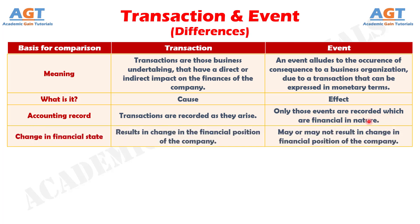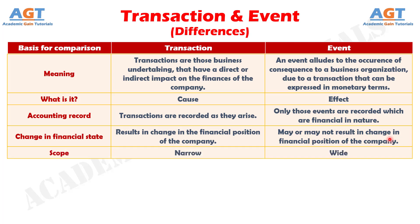Number four: the business transactions may change the financial position of the company as it has a direct impact on the company's finances. On the contrary, the events may or may not have an impact on the business finances. Difference number five: the scope of an event is wider than a transaction because a transaction is an event, but an event may or may not be a transaction.